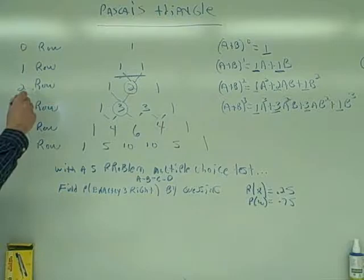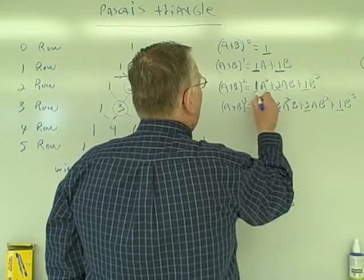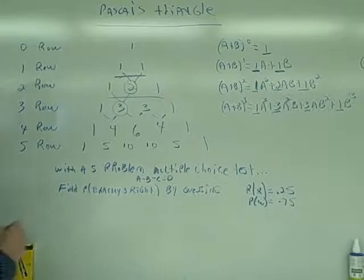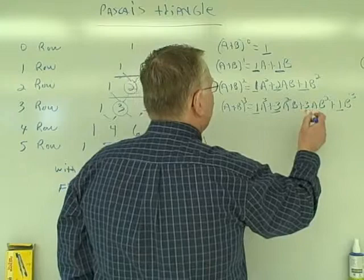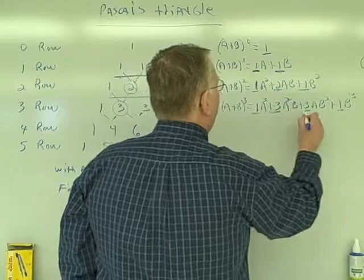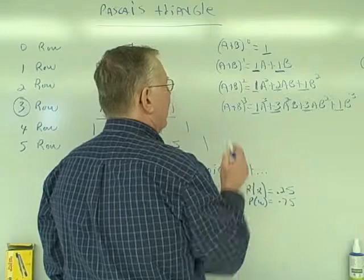The two row — one, two, one — are the coefficients of a plus b squared. I would have one a squared plus two ab plus one b squared: I get one, two, one. The three row gives the coefficients of a plus b cubed. I would have one a to the third plus three a squared b plus three a b squared plus one b to the third: one, three, three, one.